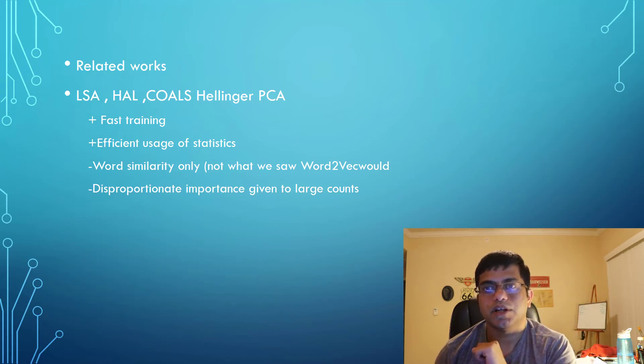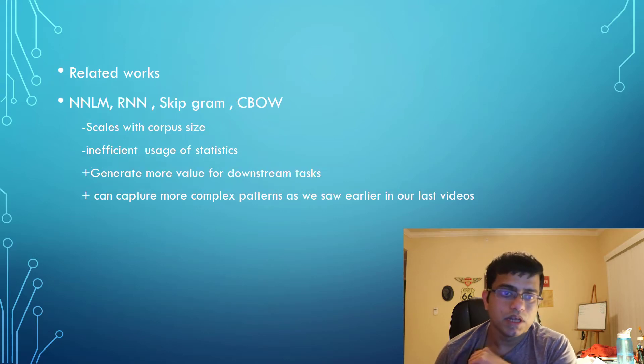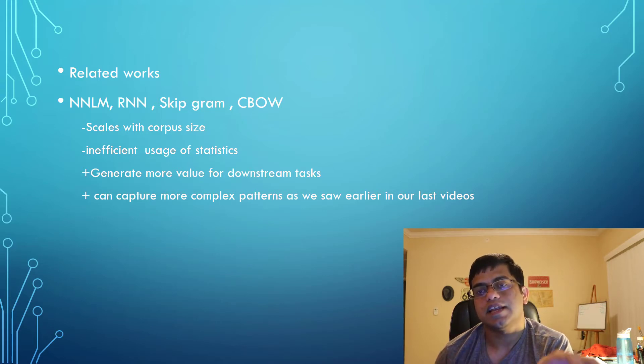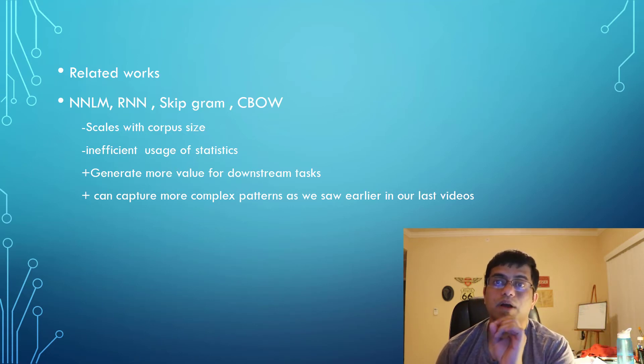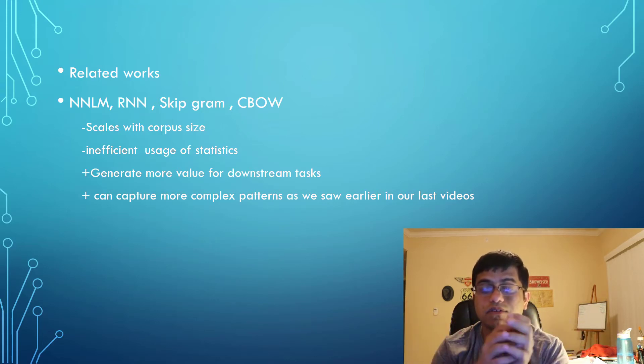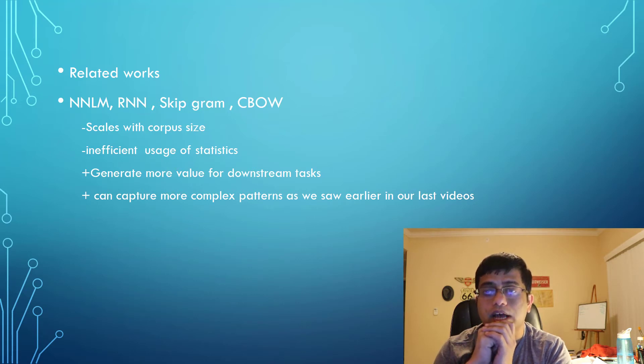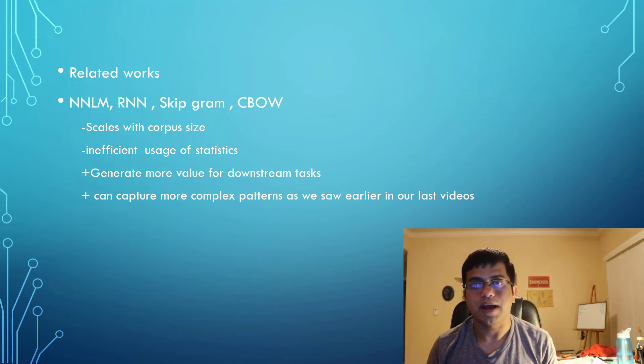We also saw models like word2vec and neural network language models by Bengio and others. The basic problems in those models: they scale with corpus size and they don't rely on statistics. But what they provide in terms of value is they help us with downstream tasks. I'm going to do separate videos on different downstream tasks, like named entity recognition. It would be an implementation video, a code share video. You can capture more complex patterns compared to matrix factorization methods.